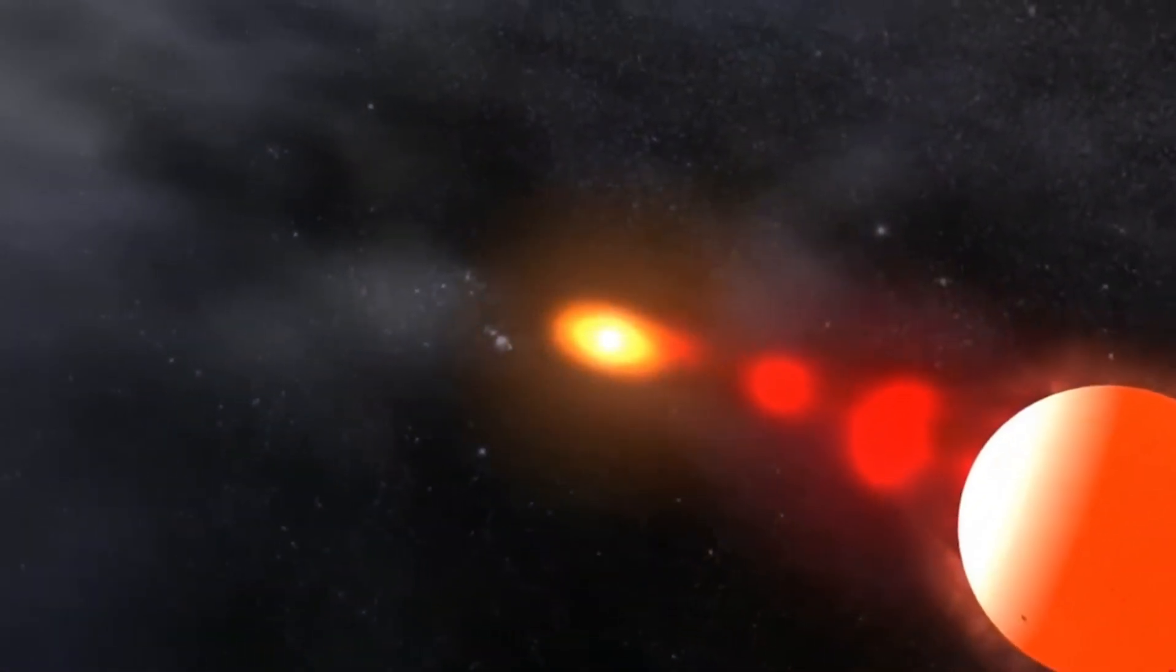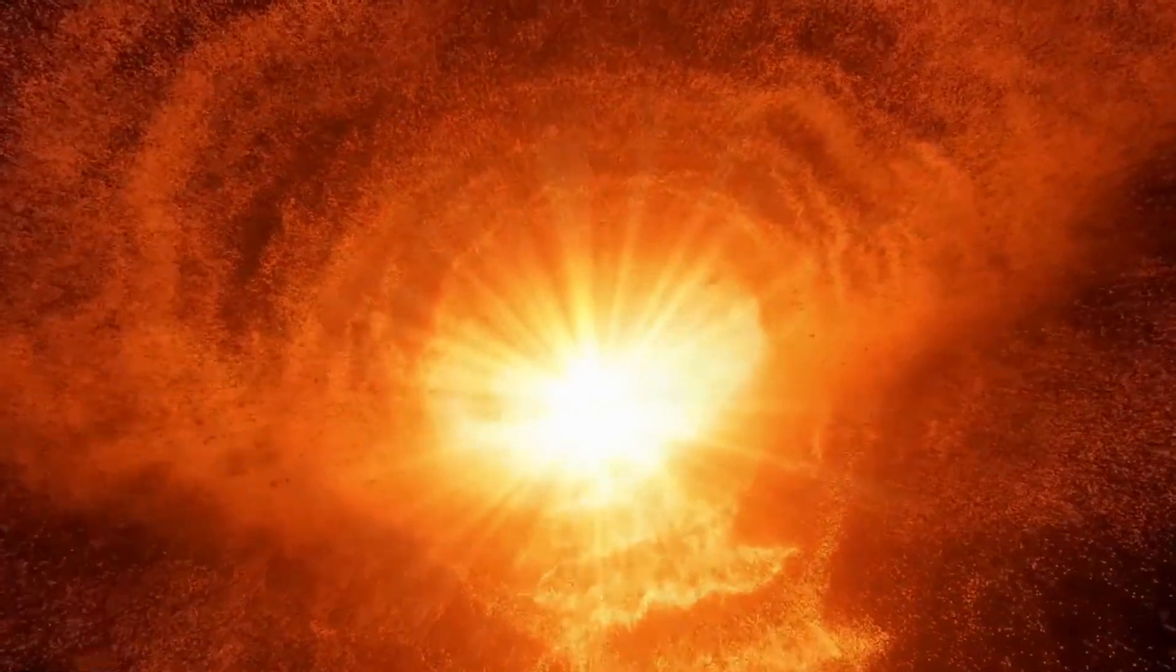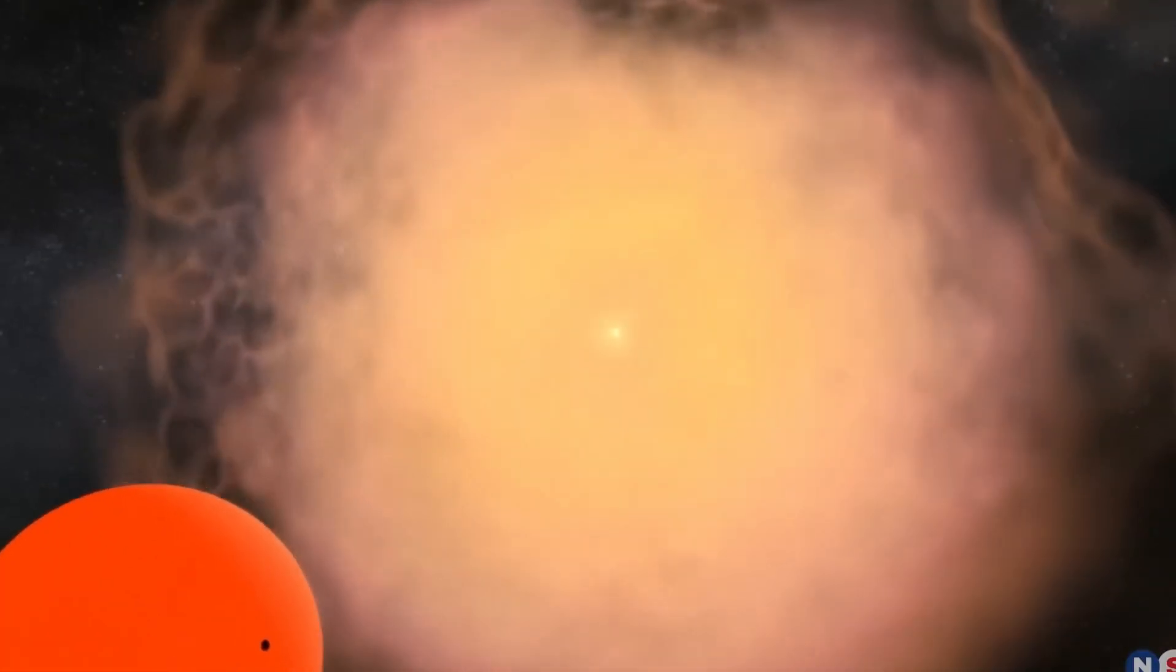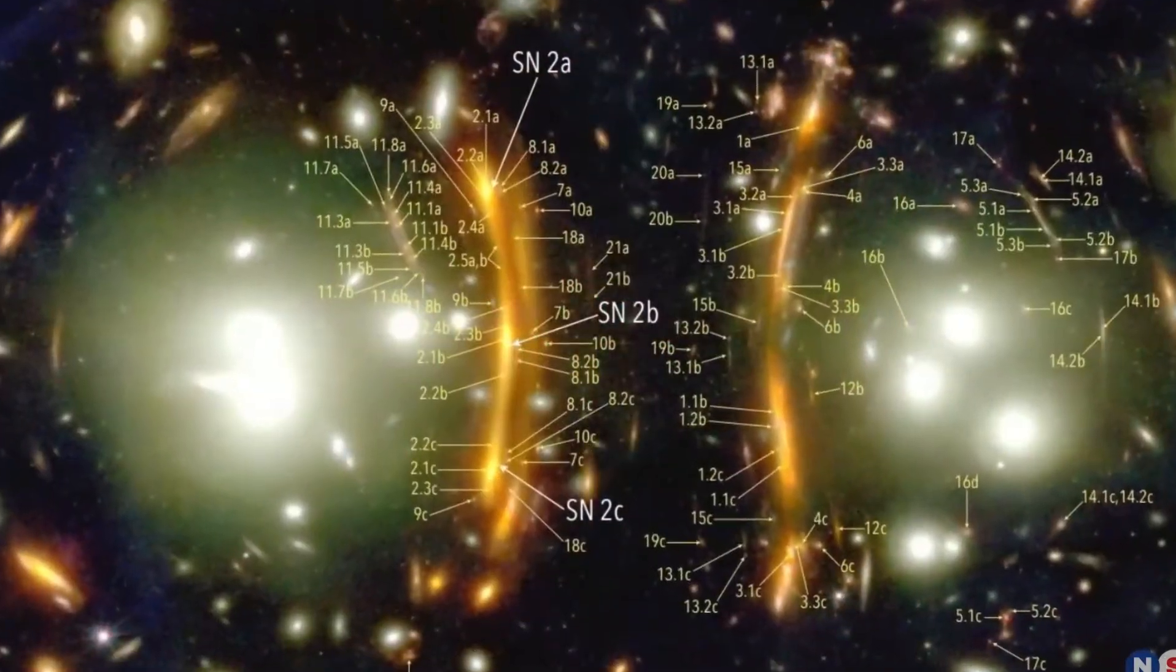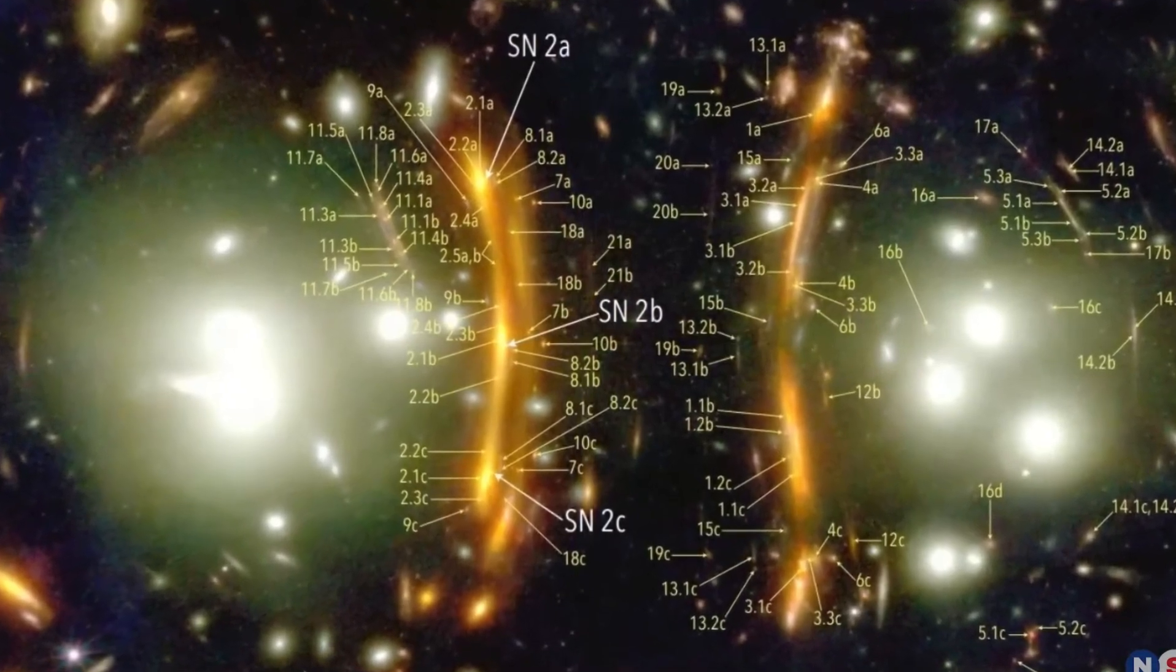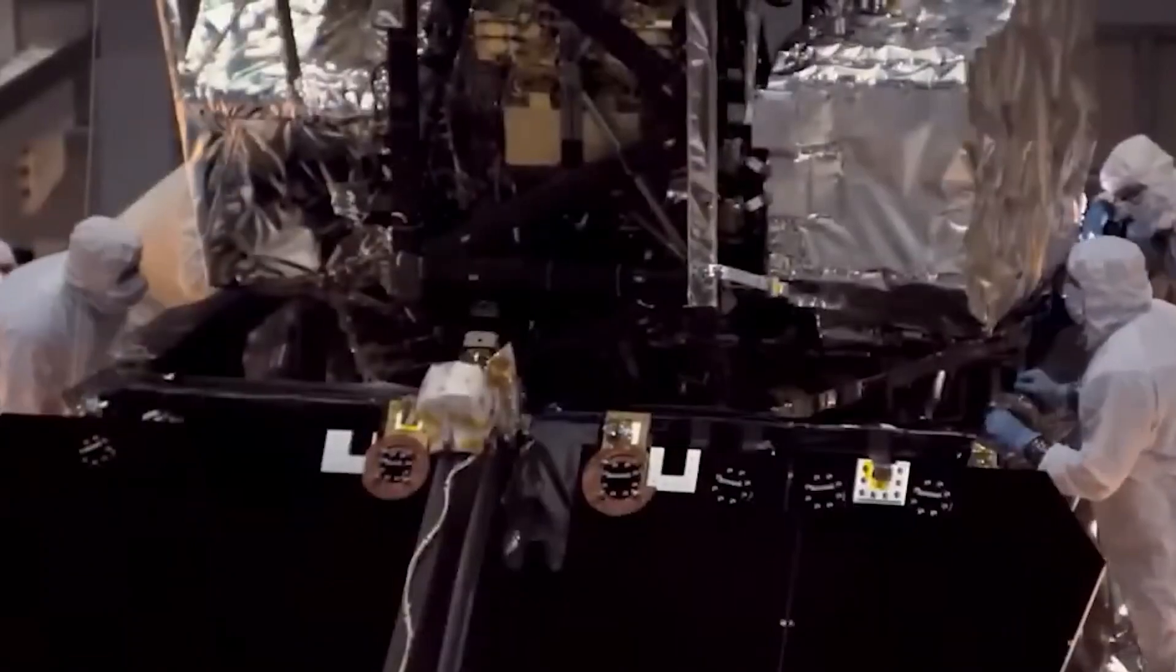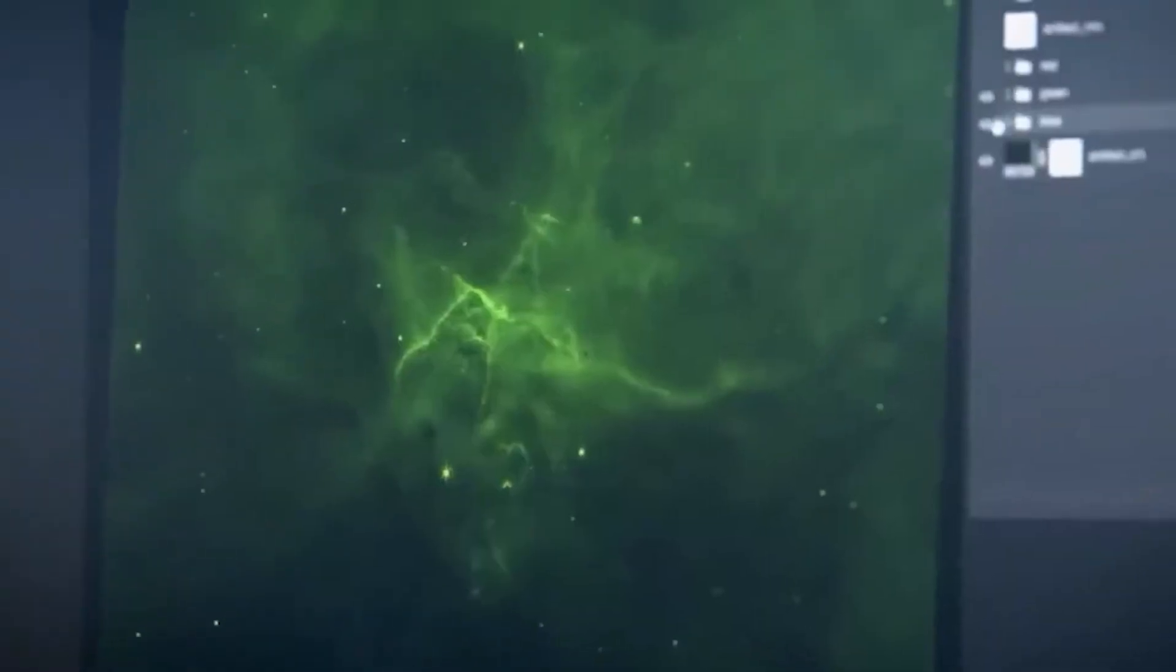The foreground galaxy cluster, named PLCK G165.7 plus 67.0, or G165, is a massive cluster located 4.5 billion light-years away, with a total mass exceeding 260 trillion solar masses. Within this cluster, multiple lensed images of background galaxies, including the triply-imaged supernova, were observed.